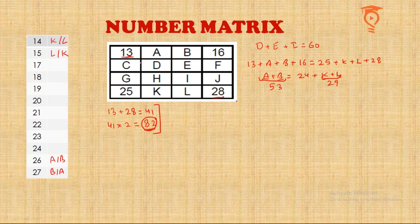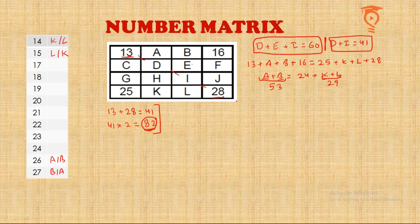Now let us look at the diagonals — we know two of the four numbers in each diagonal. For the diagonal 13, D, I, and 28: the corner numbers sum to 41, so D plus I equals 41. We were also given that D plus E plus I equals 60, which tells us E equals 19. For the other diagonal 25 + H + E + 16: out of 82 we already have 41 and 19, which is 60, so H must be 22.